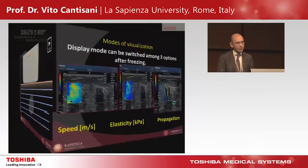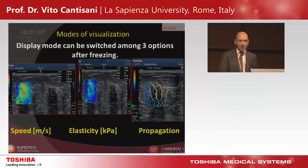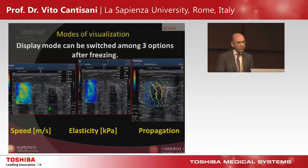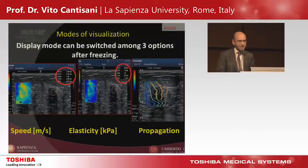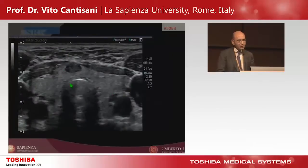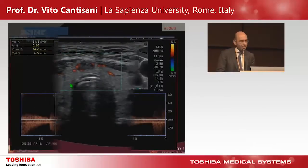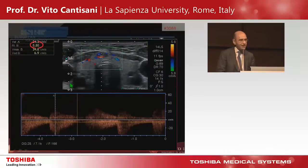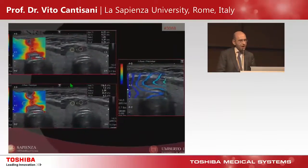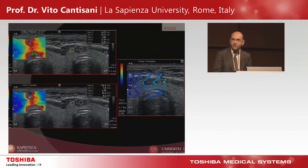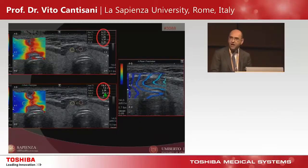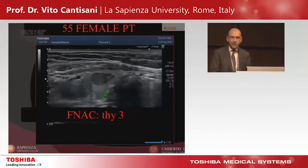Let's see some shear wave examples. On the display you can follow the propagation wave, see the polychromatic map, and obtain a number expressing elasticity or speed. Here is an example: a hypoechoic lesion with vascularization and an artifact index inside. At shear wave the lesion appears red, consistent with a hard lesion, and the numbers are very high — consistent with a final diagnosis of malignancy.